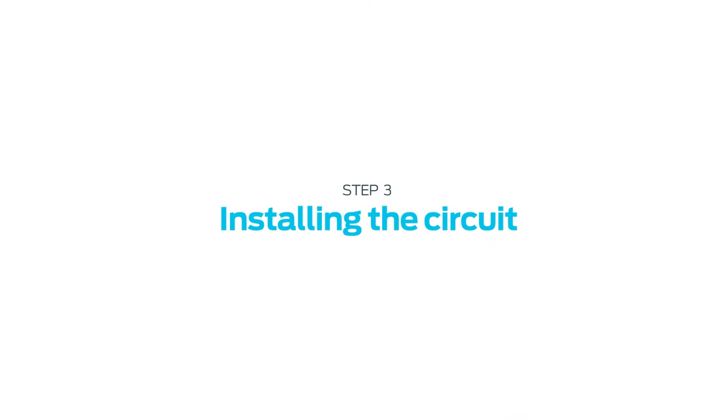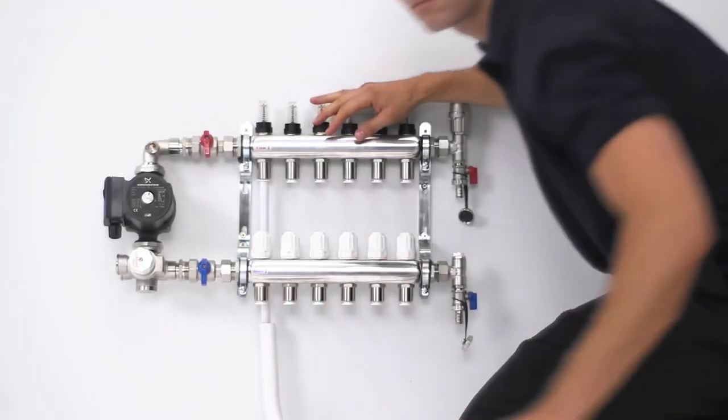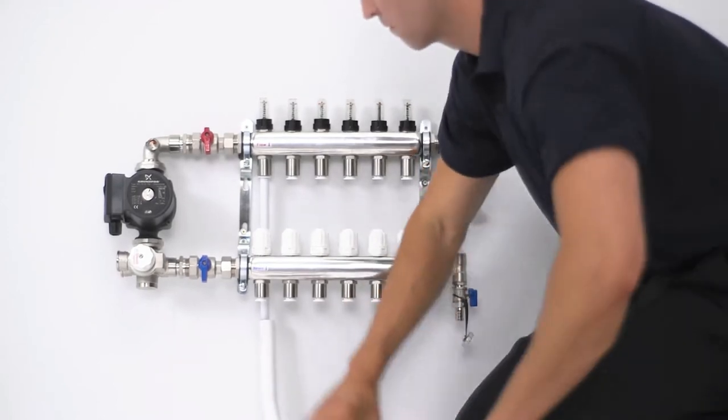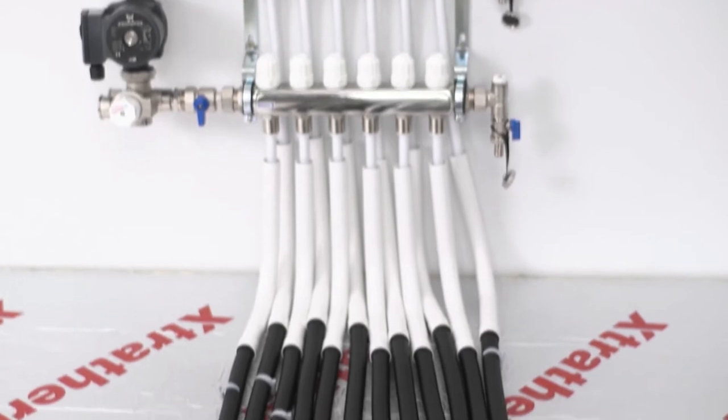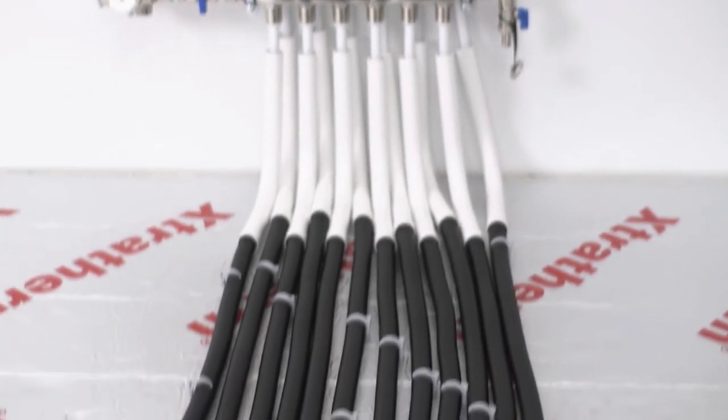Installing the circuit. We have shown in the previous video demonstration how to connect to the manifold and run the pipework to the room you're working in. After running the pipe from the manifold or one room pack to the beginning of the circuit, we can start to lay the pipe.